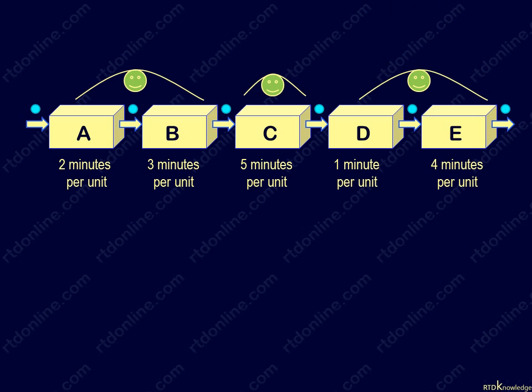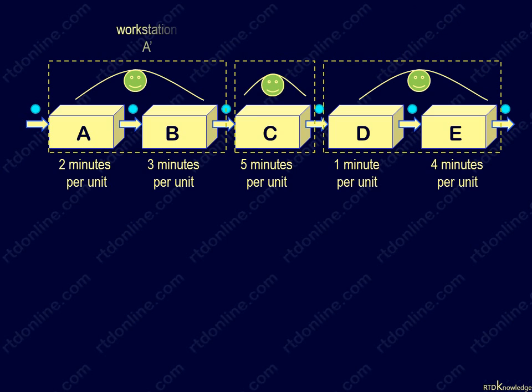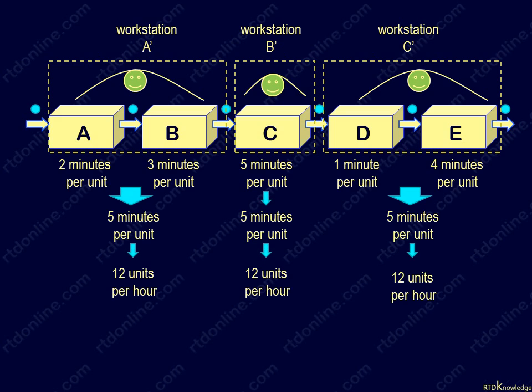We have actually created a balanced line with 3 workstations—call them A', B', and C'. We have just 3 operators, each working with exactly the same cycle time of 5 minutes.